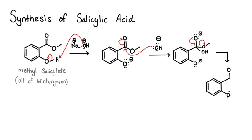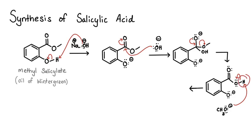In the next step, the negative charge on the top oxygen will go back and reform the pi bond that you just lost. When you reform the pi bond, the leaving group, which is the methoxide, will be kicked off from the carbon, and the methoxide will come back and remove a proton from this carboxylic acid.